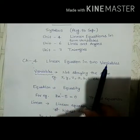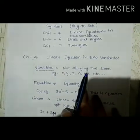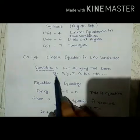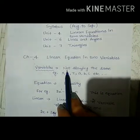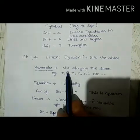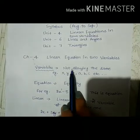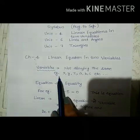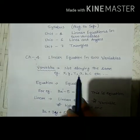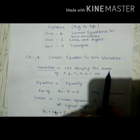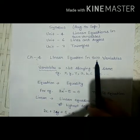Let us understand the meaning of this chapter name. Variables means the value is not the same — it can vary. For example, variables are called x, y, z, a, b, c, etc. So the meaning of variable is clear.